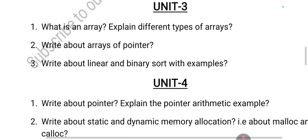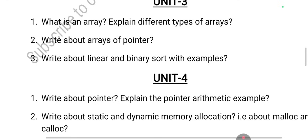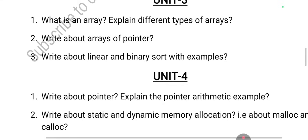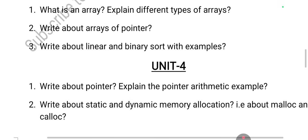Dynamic and static memory allocation is very important. A static array has its size fixed at compilation time and cannot be changed later. A dynamic array has its size specified at runtime during execution. Dynamic memory allocation is done using malloc and calloc functions. You must understand both syntaxes and practice one program on each — you will definitely get one question on this.